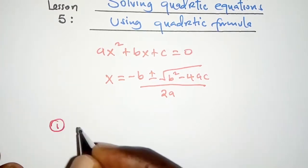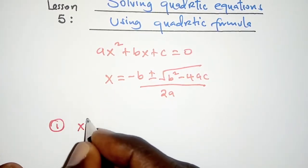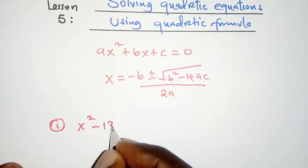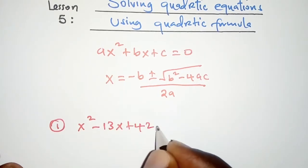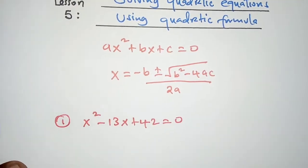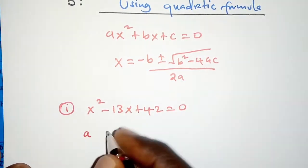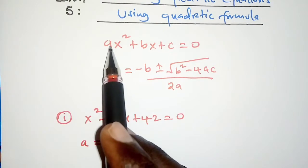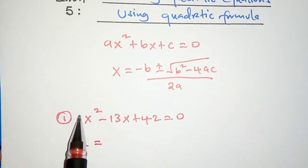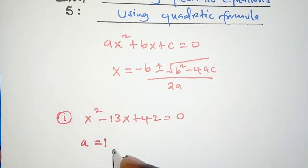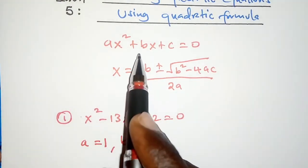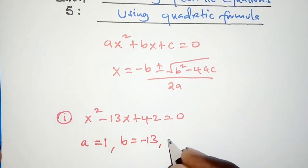So the first equation is x squared minus 13x plus 42 is equal to zero. Our task here is to identify what a is, and of course a is the coefficient of x squared and for this case the coefficient of x squared is 1. Then b is negative 13 just as we have here, c is 42.